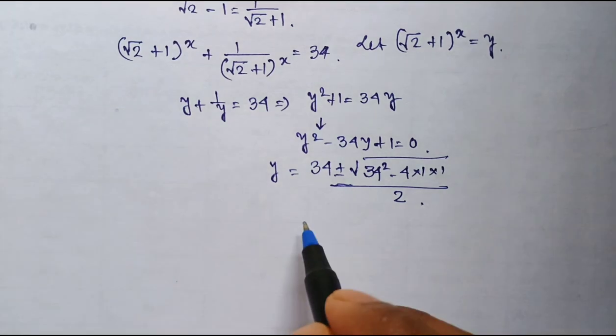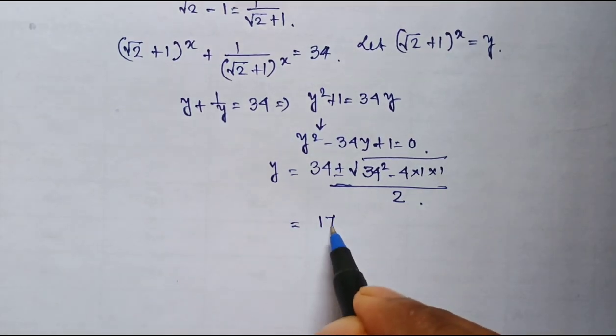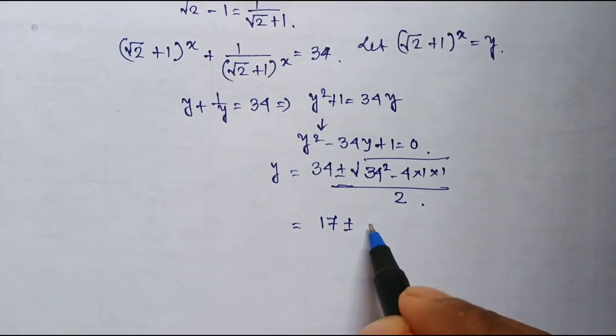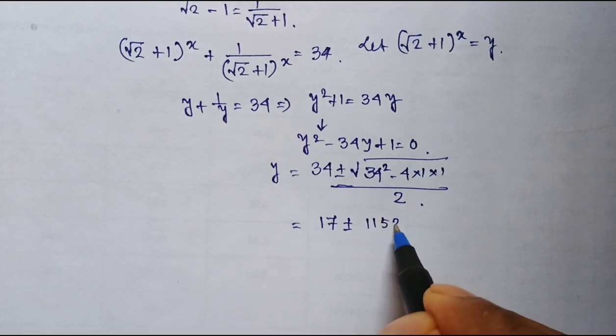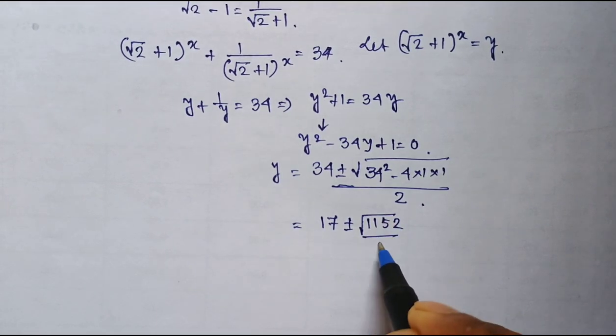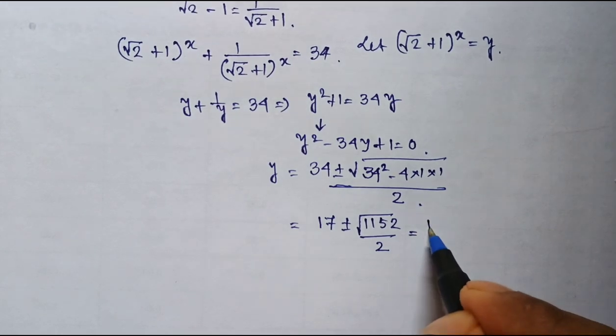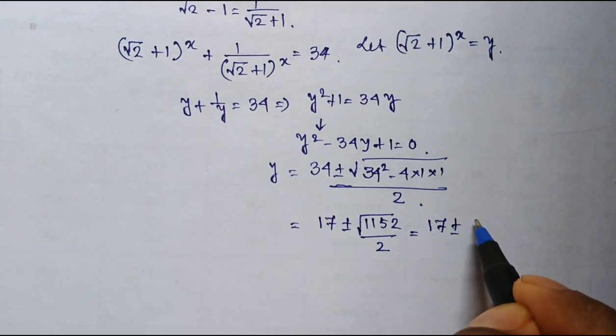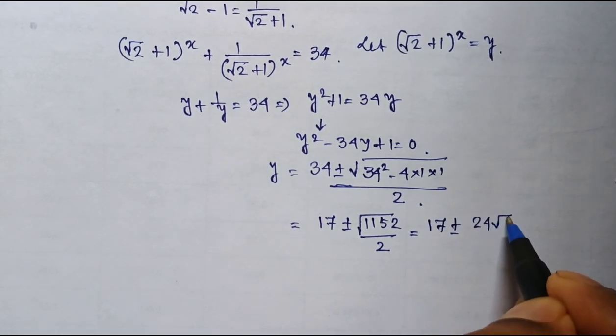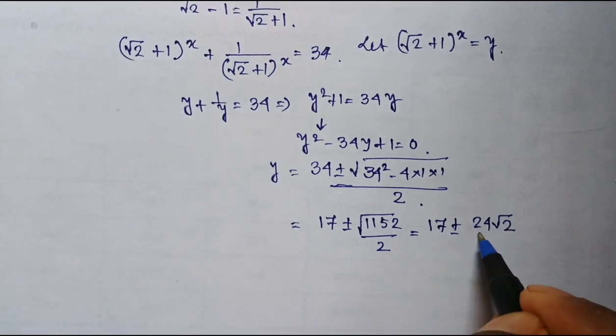Okay, now what is 34 by 2? That is 17. And within this one, this is 1152. Square root of that whole divided by 2. That means 17 plus minus, I can write it as 24 square root of 2 whole divided by 2.